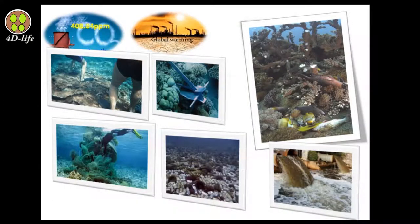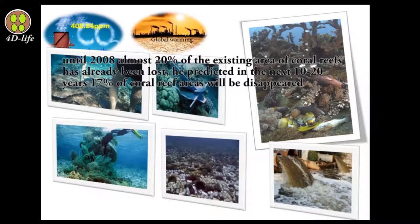Coral reefs are dying around the world because of our activities. A study by Wilkinson in 2008 showed that until 2008, almost 20% of the existing area of coral reef has been already lost. He predicted in the next 10 or 20 years, 70% of coral reef area will be disappeared.